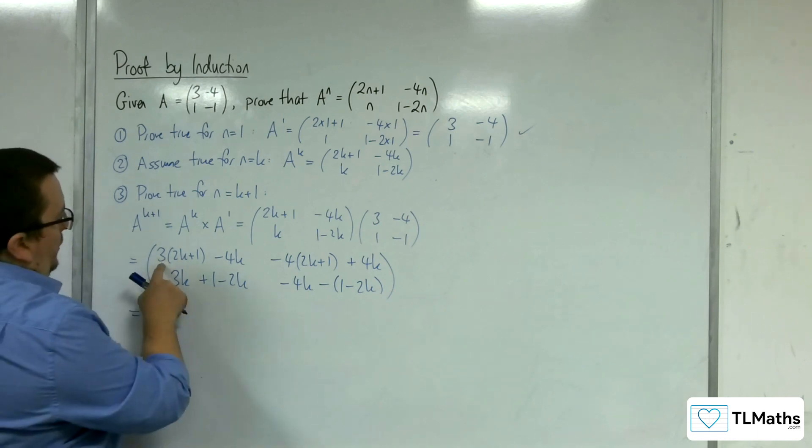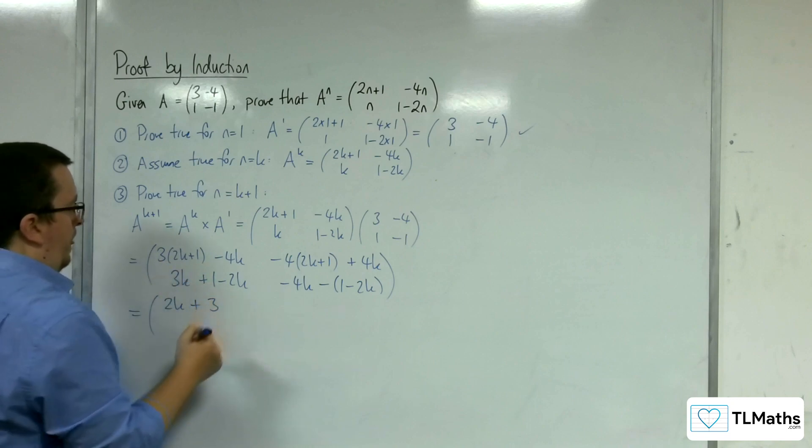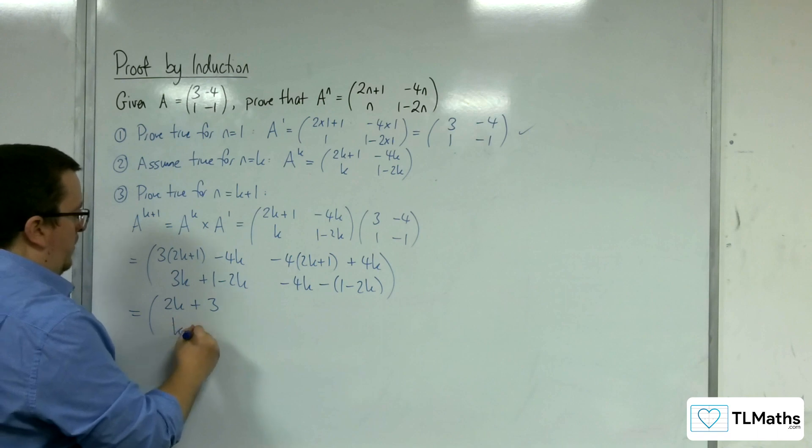So we've got 6k take away 4k, leaves us with 2k plus 3. We've got 3k take away 2k, which is just k plus 1.